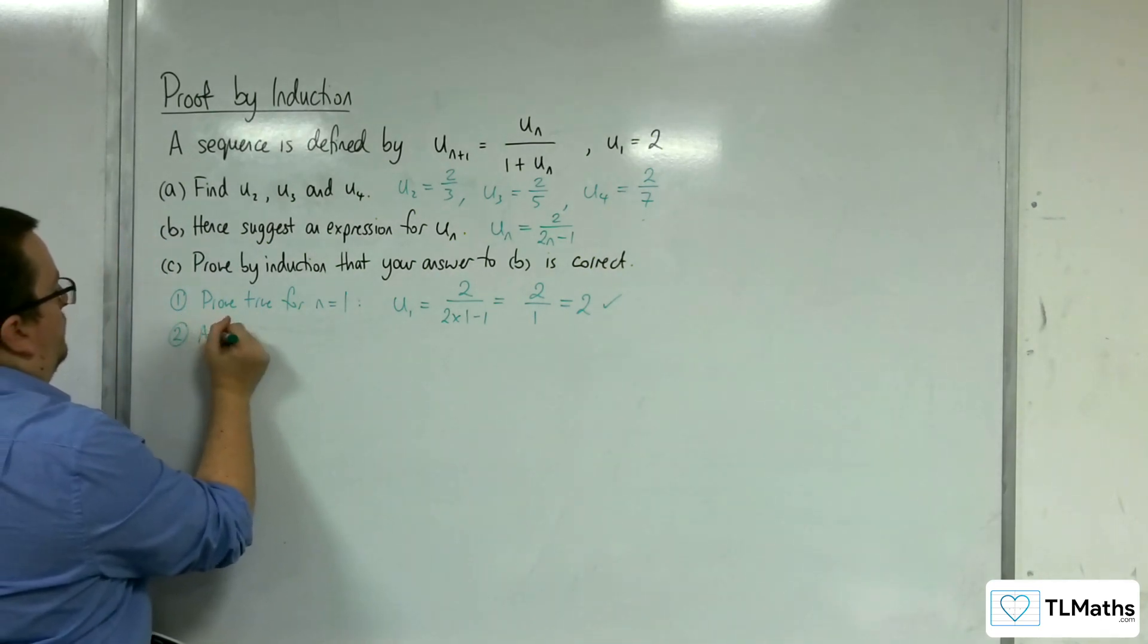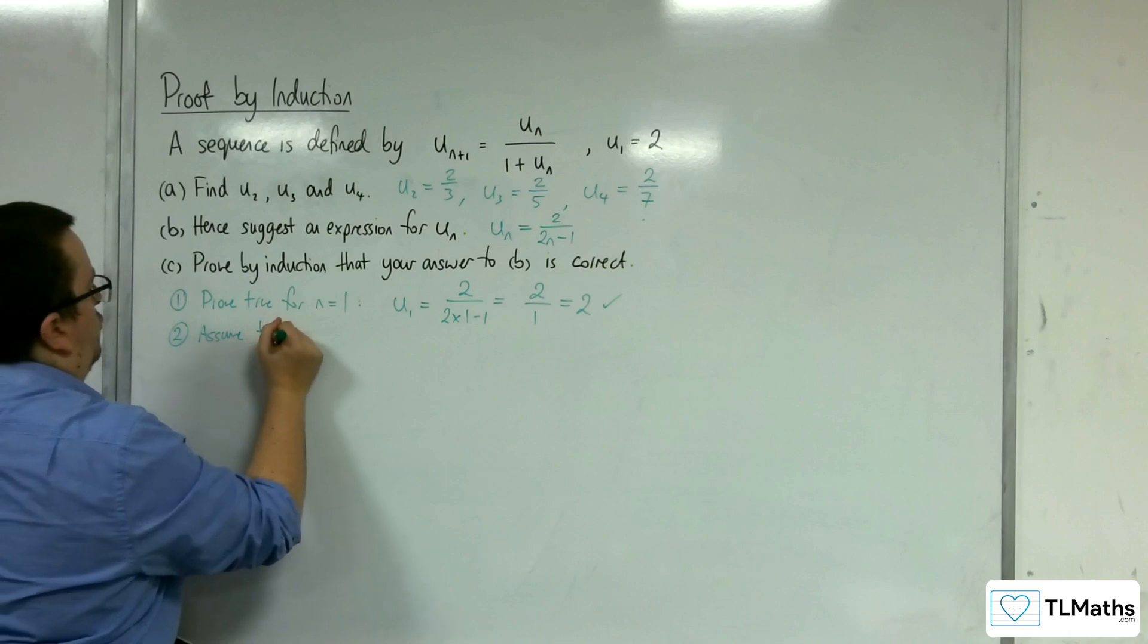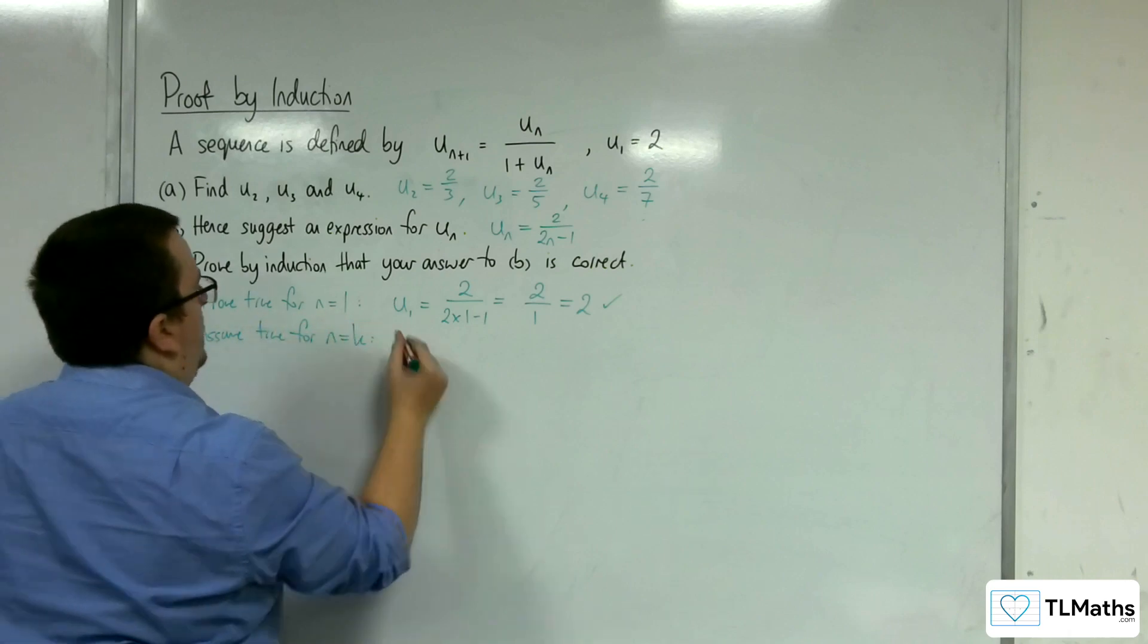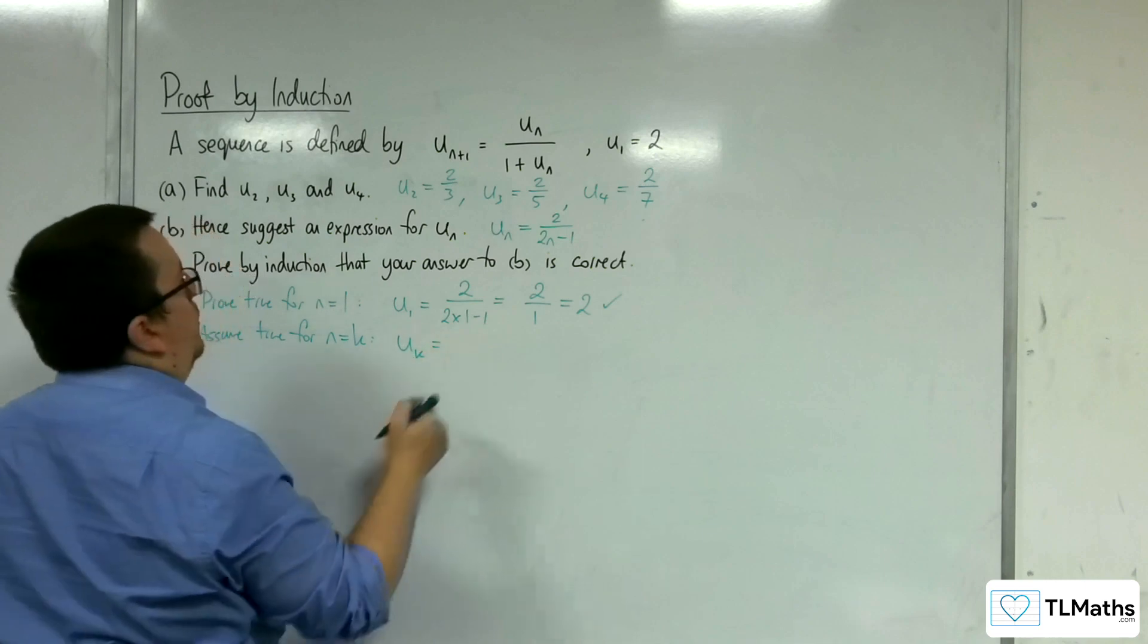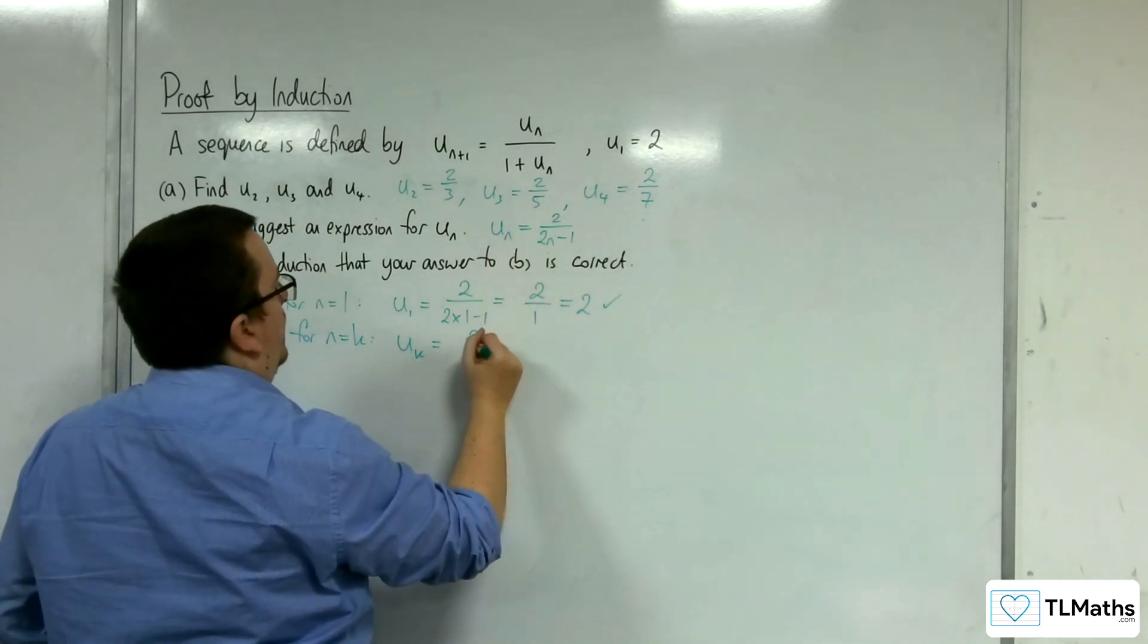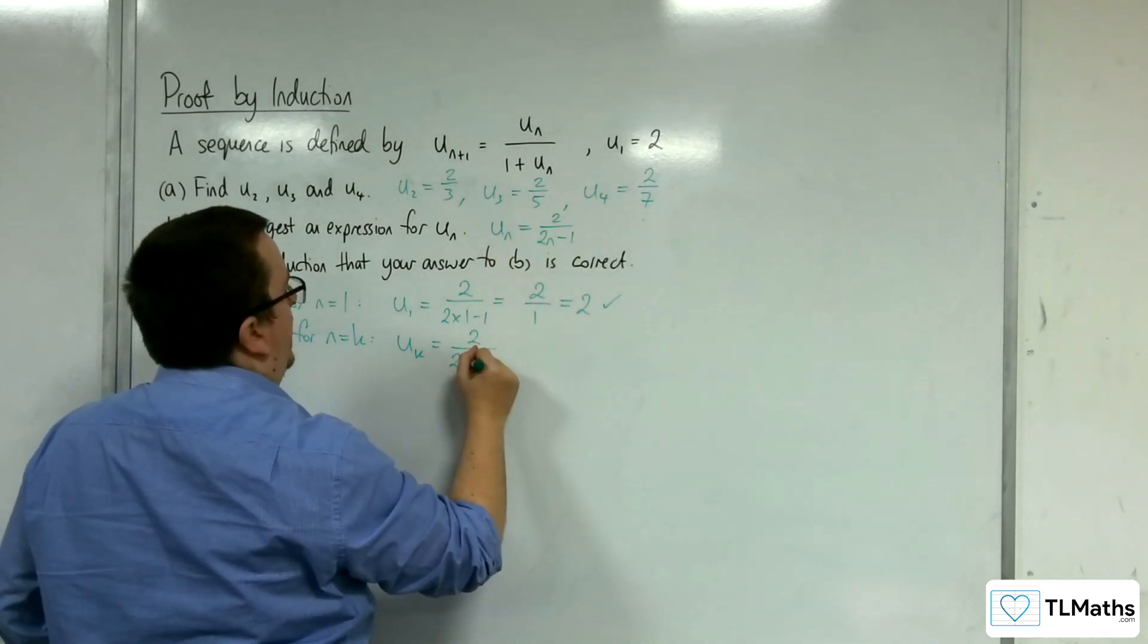Stage 2: assume true for n is equal to k. So u(k) will be equal to 2 over 2k minus 1.